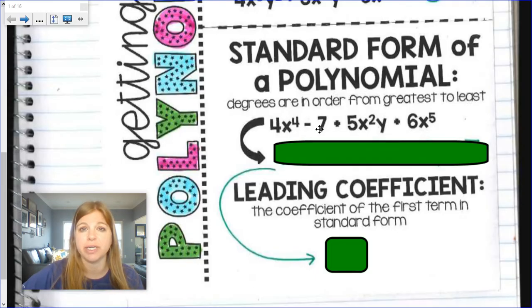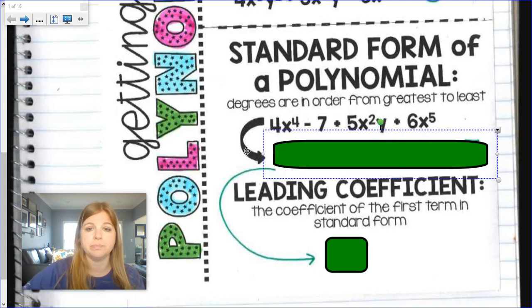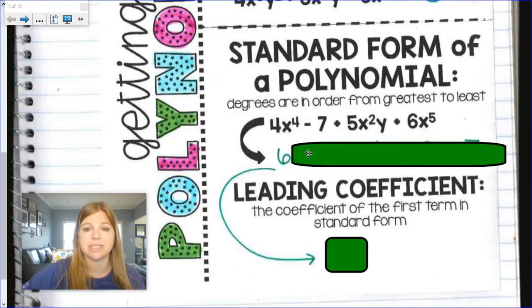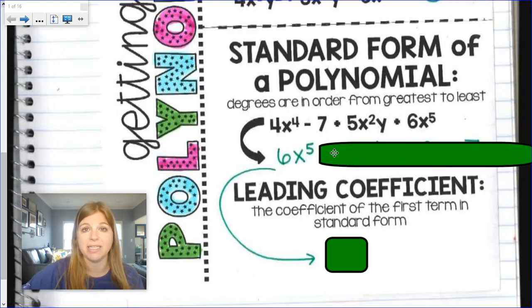Negative 7 has a degree of 0. 5x squared y would have a degree of 3. 2 plus 1 is 3. My last term has a degree of 5. So if I wanted to order these from greatest degree to least degree, my first term would be 6x to the 5th, that has the highest degree. What would come next is the highest degree?